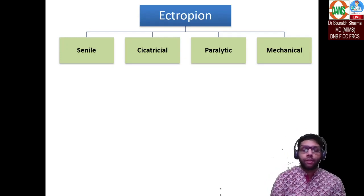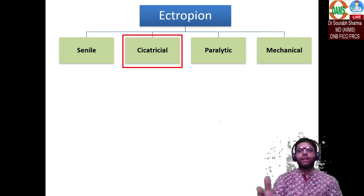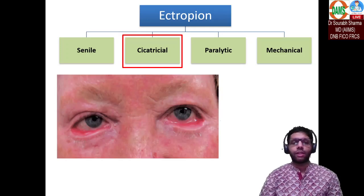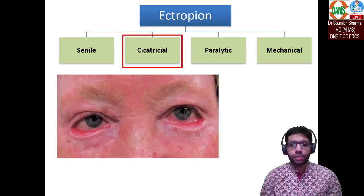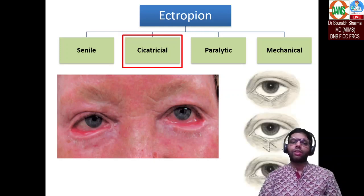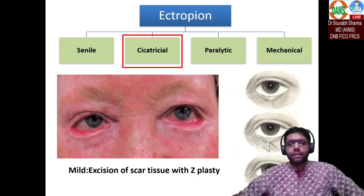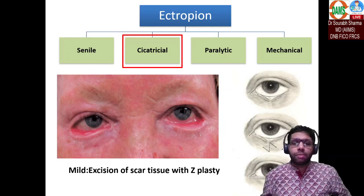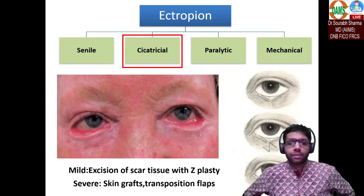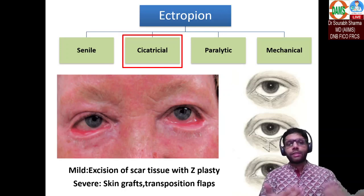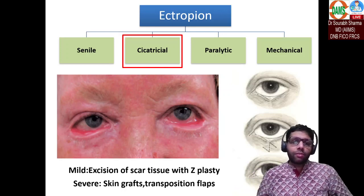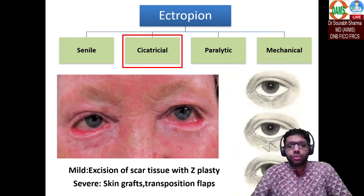Quick points for other types: Mechanical ectropion — treat the basic cause; remove the tumor. Cicatricial ectropion — excise the scar tissue. For mild cases, Z-plasty is done; for severe cases involving burns or chemical injuries, skin grafting or flaps are used.